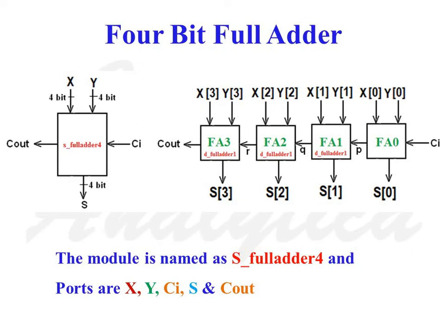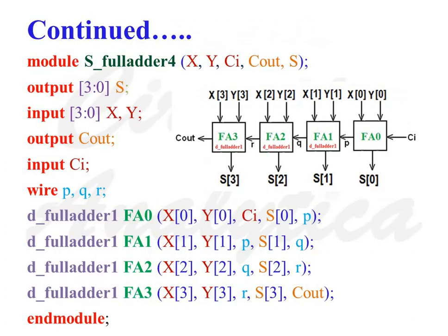Now we are going to write the Verilog code for this 4-bit full adder. So the first line defines the name of this module as s_fulladder4. Module space s_fulladder4 inside bracket x, y, c_i, c_out, s close bracket semicolon.